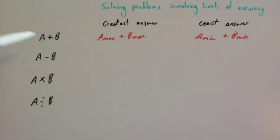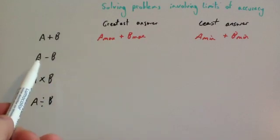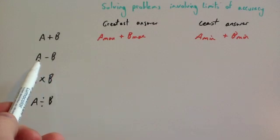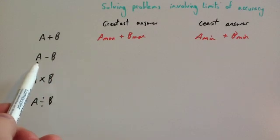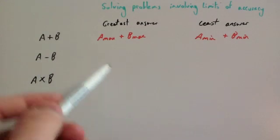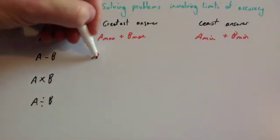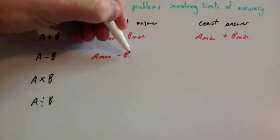If you were going to subtract them and wanted the biggest answer, you would want the upper bound for a and the lower bound for b. Because you'd be taking a small number away from a large number, and that would give you the biggest possible answer. So it would be a max minus b min.